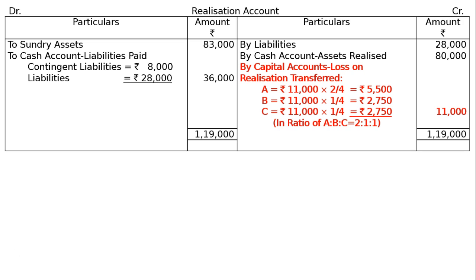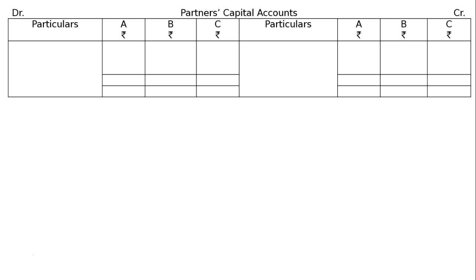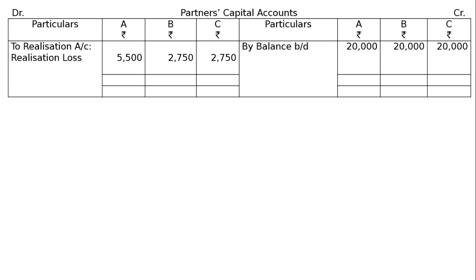The totaling of all three losses is rupees 11,000. In the capital accounts, by balance brought down rupees 20,000 for A, B, and C. The realization loss entries: A rupees 5,500, B rupees 2,750, C rupees 2,750. The totaling on the credit side is rupees 20,000 for all, and that will be transferred to the debit side.